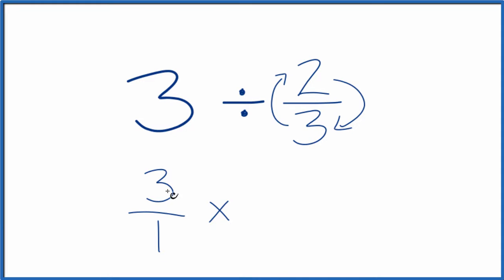So let's multiply 3 over 1 times the reciprocal of 2 thirds, which is 3 halves. We get 3 times 3 is 9, 1 times 2 is 2. So 3 divided by 2 thirds equals 9 over 2.